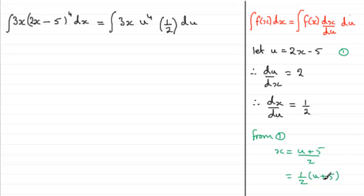What we do is we substitute this back in here for x. So we've got the integral of 3 multiplied by x. I'll take this one here, u plus 5 over 2. Then that's being multiplied by the u to the power 4, and then the half, and then we're integrating with respect to u.